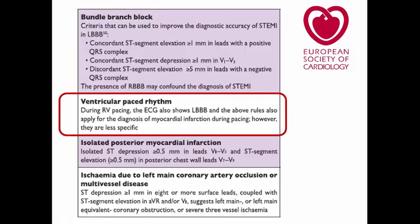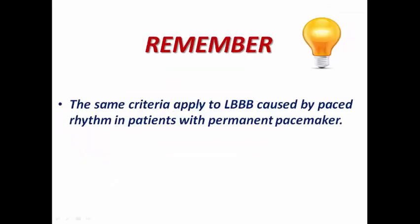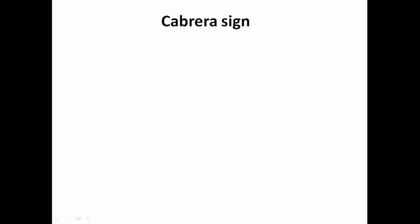Ventricular paced rhythm poses the same problem because right ventricular pacing produces a left bundle branch block morphology. We can apply the same Sgarbossa rules to paced rhythm to differentiate acute from chronic. In some cases, if the patient is not pacemaker-dependent, a clinician may use a programmer to temporarily inhibit the permanent pacemaker and check the intrinsic ECG for ST-elevation, though this is not feasible in all clinical situations. The same criteria applied to LBBB also apply to left bundle morphology caused by paced rhythm in patients with a permanent pacemaker.